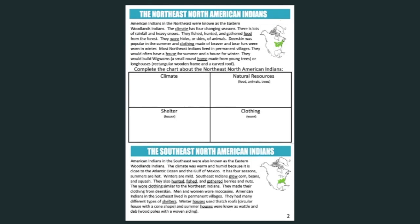I am going to read the text with you, but before you do the Foursquare Organizer, I would like for you to re-read the text to yourself. The Northeast North American Indians: American Indians in the Northeast were known as the Eastern Woodland Indians. The climate has four changing seasons with lots of rainfall and heavy snows. They fished, hunted, and gathered food from the forest. They wore hides or skins of animals — deerskin was popular in the summer, and beaver and bear furs were worn in winter. Most Northeast Indians lived in permanent villages, often having a house for summer and a house for winter. They would build wigwams — a small round home made from young trees — or longhouses, which have a rectangular wooden frame and a curved roof.